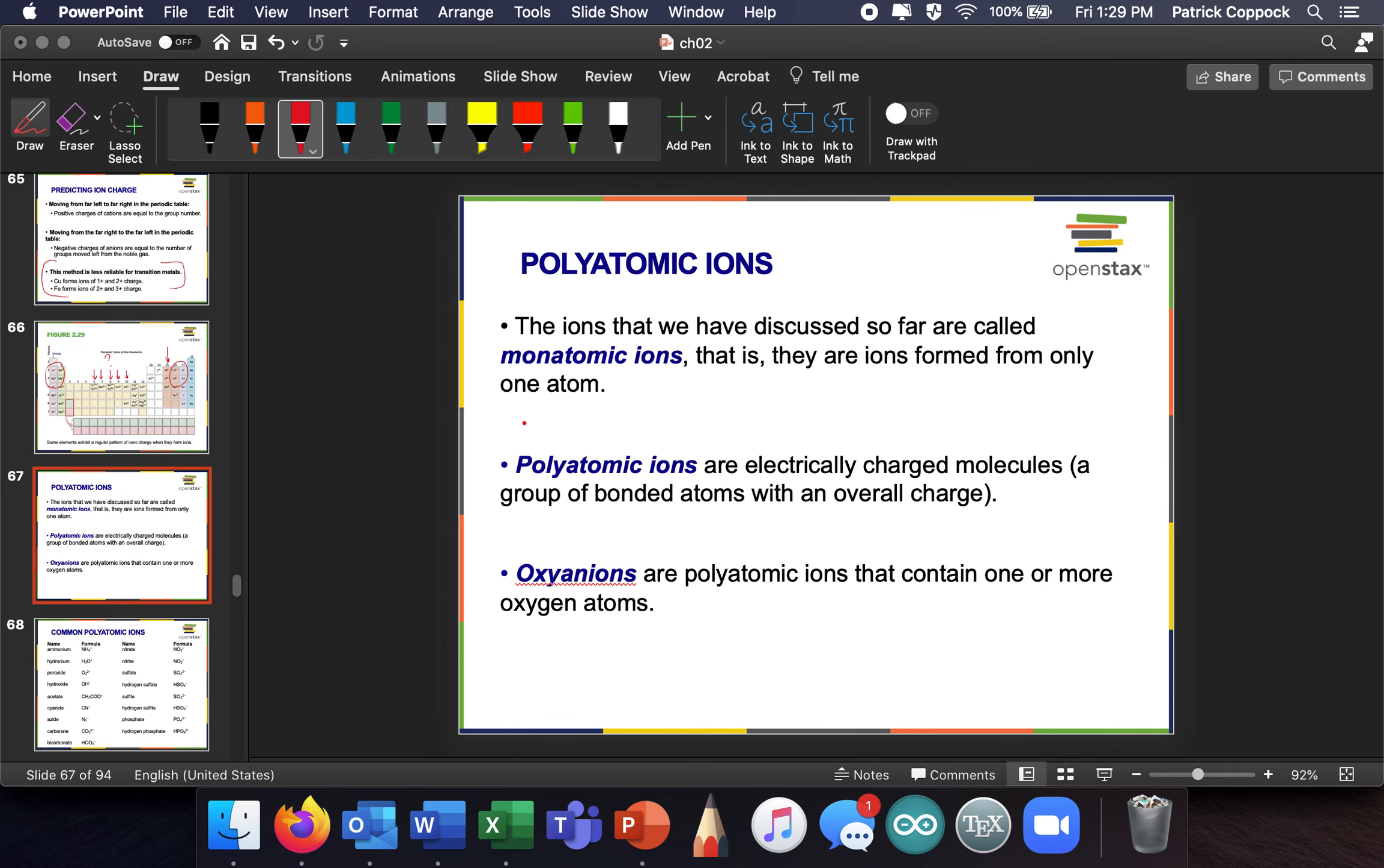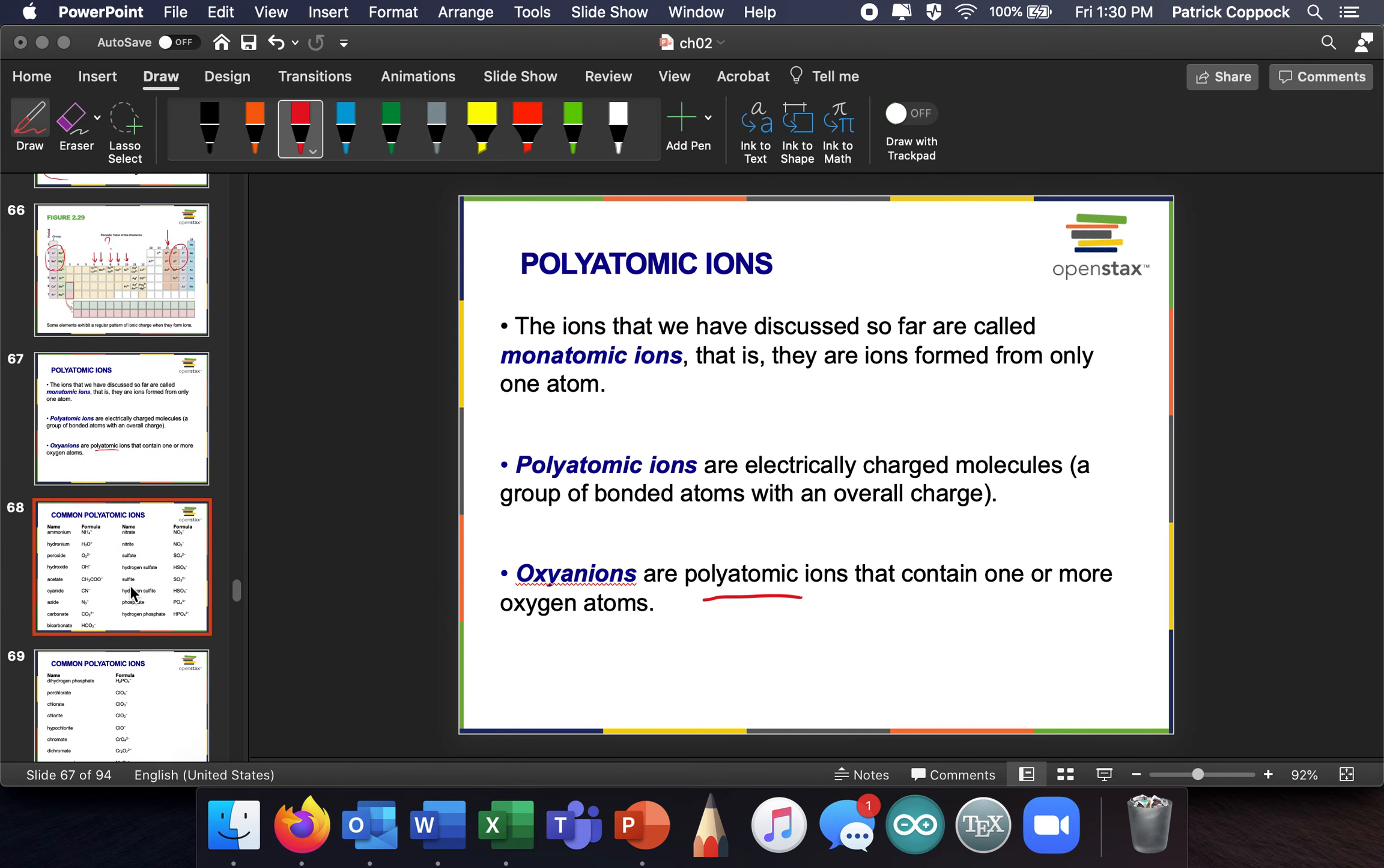Now, polyatomic ions are ions that have more than one atom in them. So far, the ions we were talking about were monatomic ions. It's just one atom gaining or losing an electron. But a polyatomic has got lots of atoms in it. Oxoanions are polyatomic ions that contain one or more oxygen atoms. So here's some common polyatomic ions. Here's a polyatomic ion. It's got five atoms in it, four hydrogen and a nitrogen. And it's got a plus. By the way, there's only two pluses in this whole table. But these are all ions and these should be memorized. You will eventually memorize these.